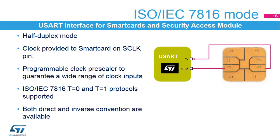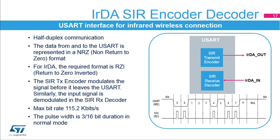The USART supports IRDA specifications, which is a half-duplex communication protocol. The data from and to the USART is represented in NRZ or non-return to zero format. For IRDA, the required format is RZI, return to zero inverted, where a one is signaled by holding the line low and a zero is signaled by a short high pulse. The SIR transmit encoder modulates the NRZ transmit bit stream output from the USART, and the SIR receive decoder demodulates the return-to-zero bit stream from the infrared detector and outputs the received NRZ serial bit stream to the USART.